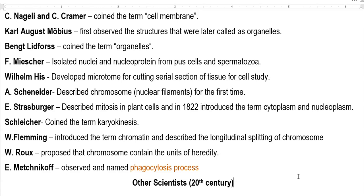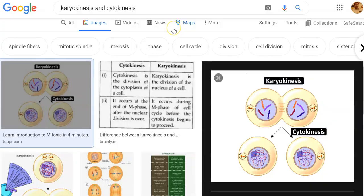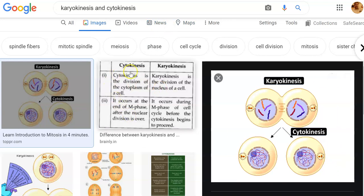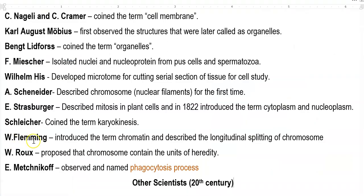The next scientist is Sileser, who coined the term 'karyokinesis.' The difference between cytokinesis and karyokinesis is shown through a diagram. Cytokinesis is the division of the cytoplasm of the cell, whereas karyokinesis is the division of the nucleus of a cell.